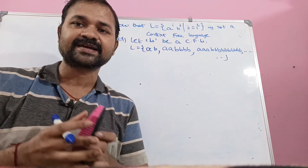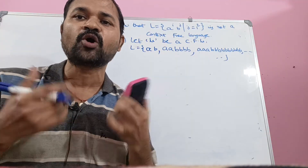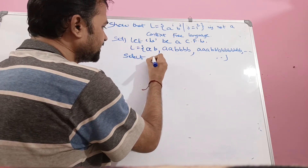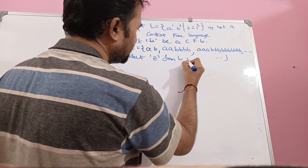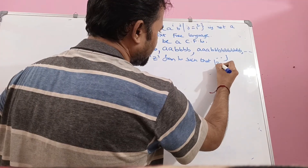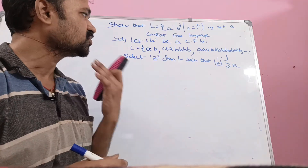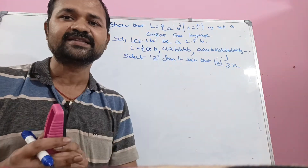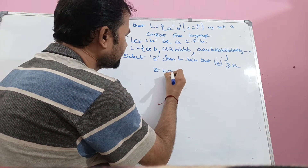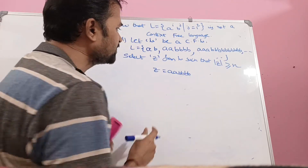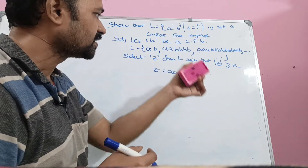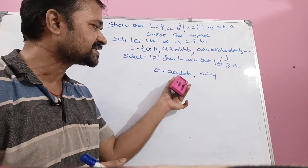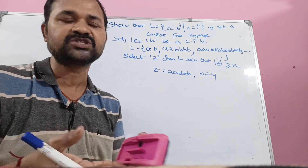Next, we have to select a string from the language such that |z| is greater than or equal to n, where n means the pumping length. Let us assume n = 4. Let z = aabbbb. The length of that string is 6, and 6 is greater than or equal to 4, so the condition is true.